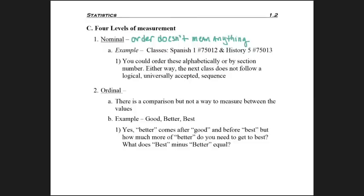So for example, imagine this semester you're taking Spanish 1, which is class number 75012, and you're also taking History 5, which in the catalog is number 75013. So in terms of your classes, you could order them alphabetically, but does that mean anything?